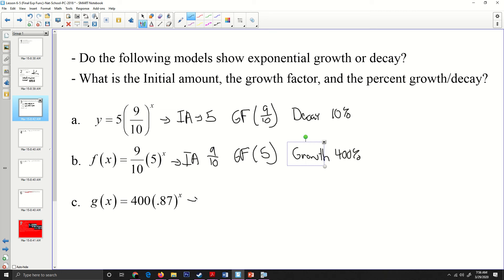This last one here, the initial amount is going to be 400. The growth factor is going to be 0.87. And when I go 0.87 minus one, I'm going to get negative 0.13. And so this is again going to be decay and it's going to be 13%.